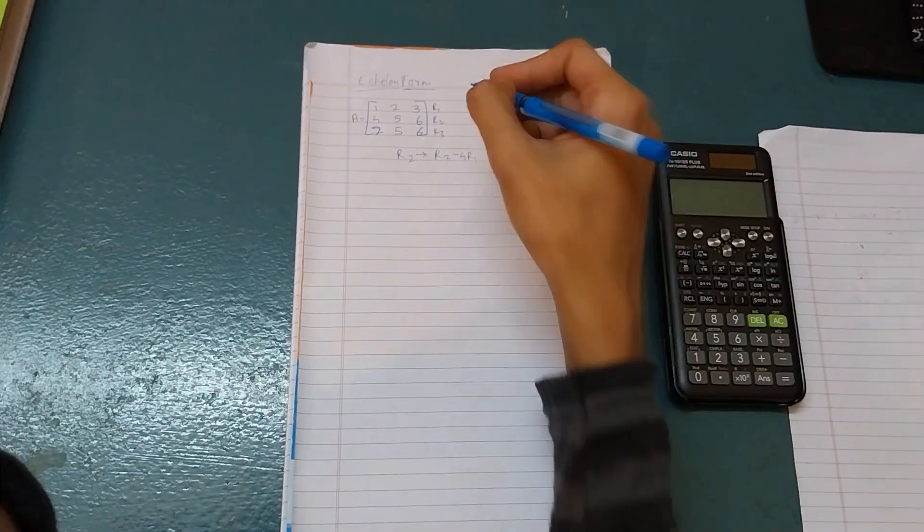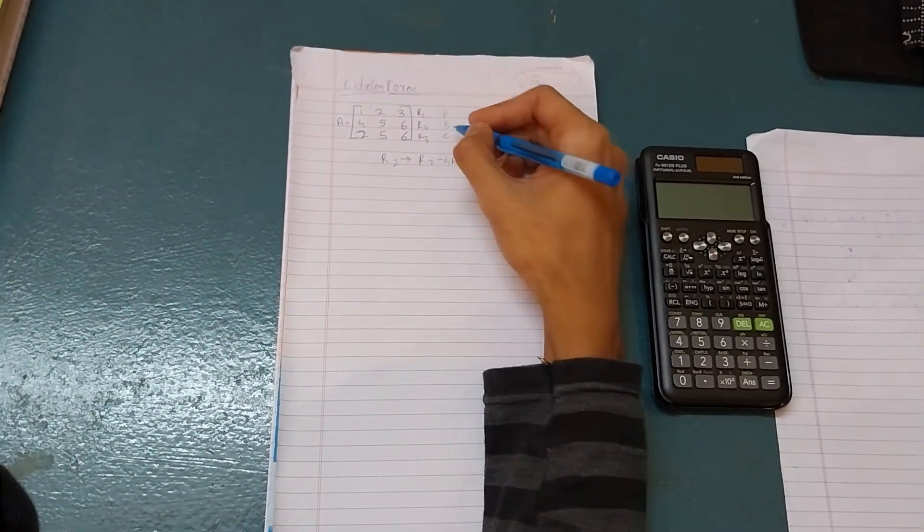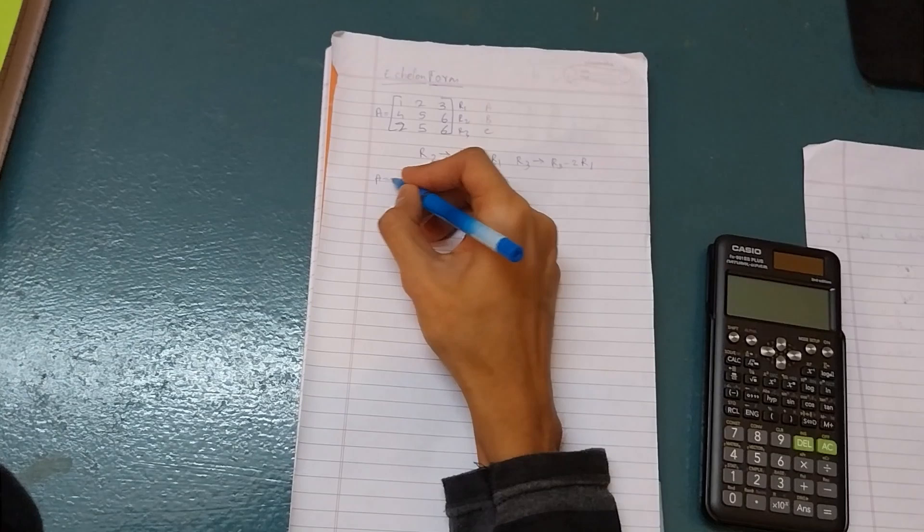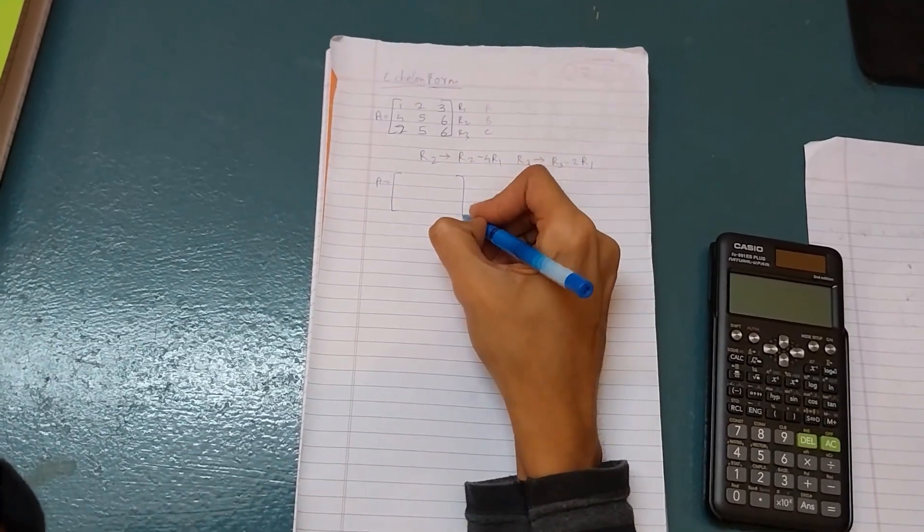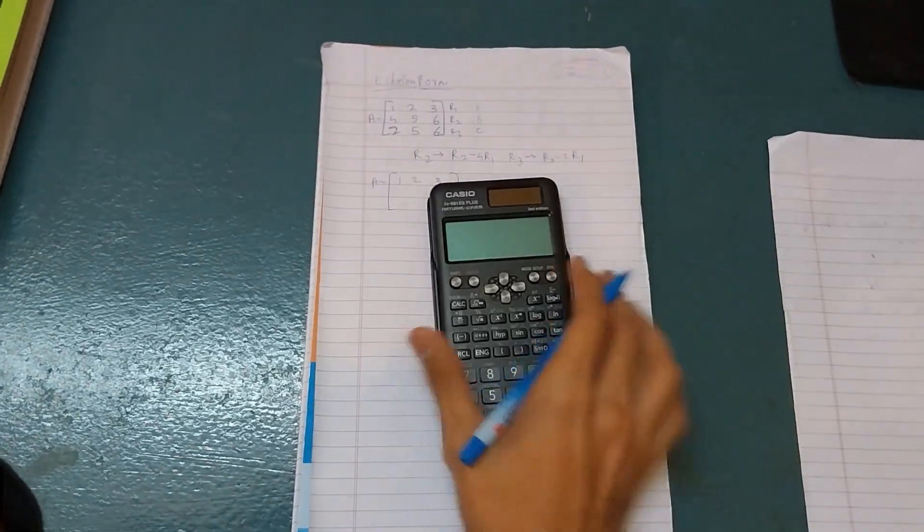Now let us consider R1 as A, R2 as B and R3 as C. First I will write A equals the first row, which will be the same. Then use the calculator.